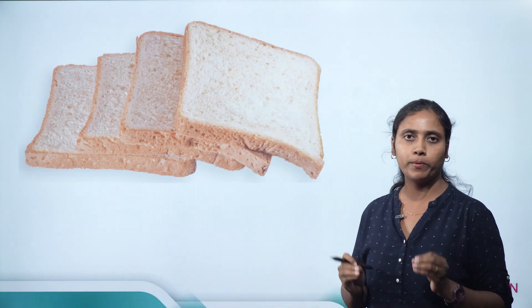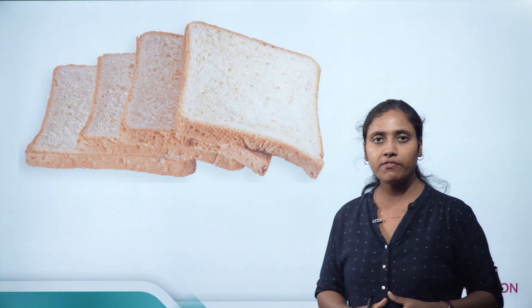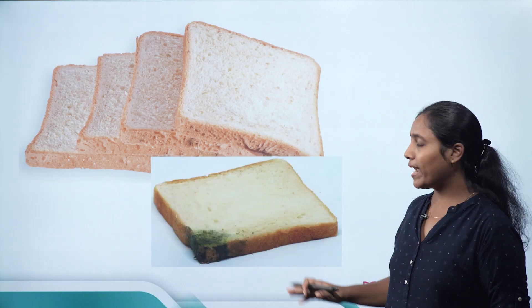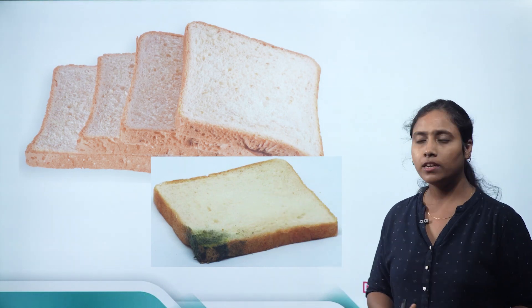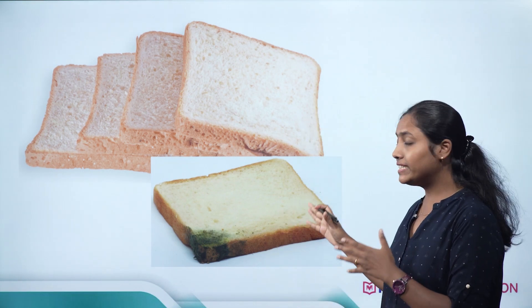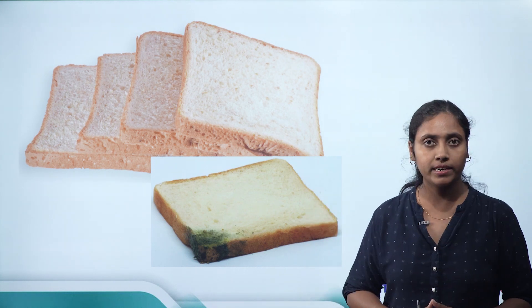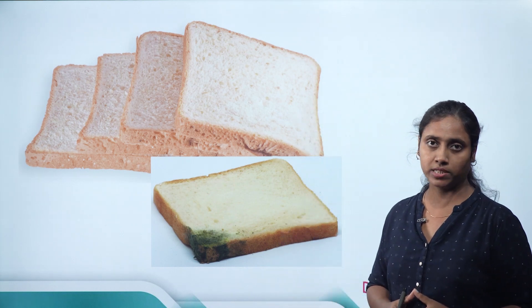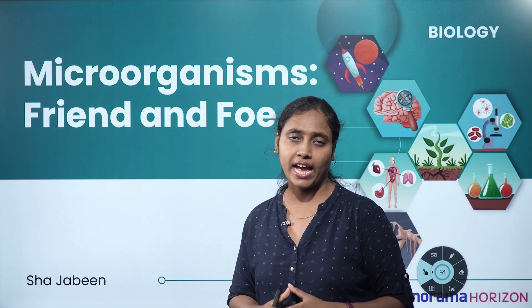What would happen if we keep a few slices of bread on a shelf for a few days? You will find certain white or green outgrowths on the bread. What are these outgrowths? From where do these outgrowths come from? How did they fall on the bread? Let's find out answers to all these questions in the chapter Microorganisms: Friends and Foe.